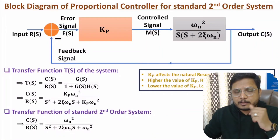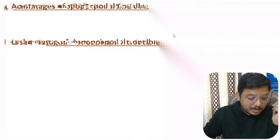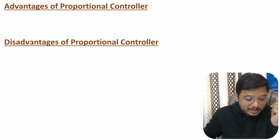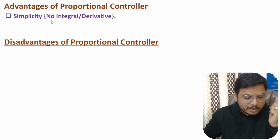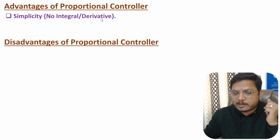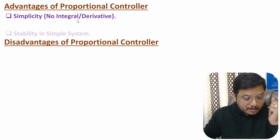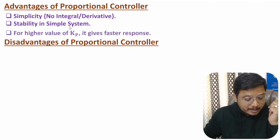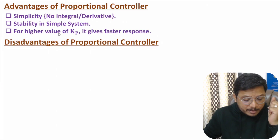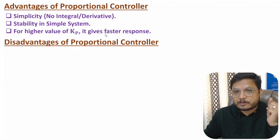Now I will discuss the advantages and disadvantages of the proportional controller. In terms of advantages: the proportional controller offers simplicity — we don't need any integral or derivative component. It provides stability with simple systems, and for higher values of Kp we have a faster response. These are the main advantages.